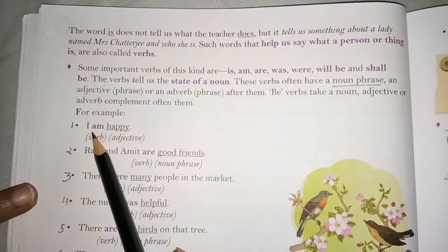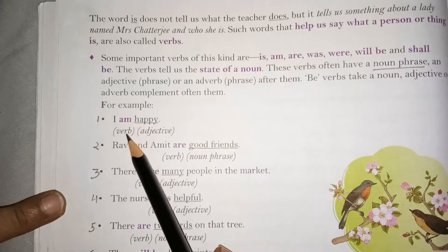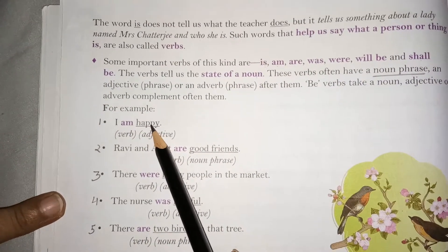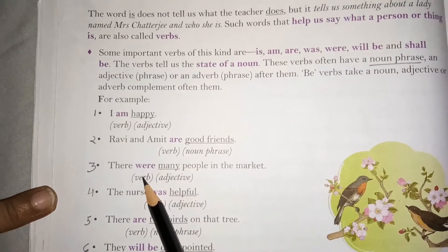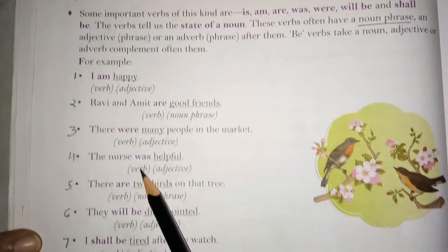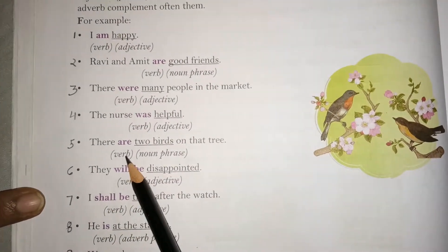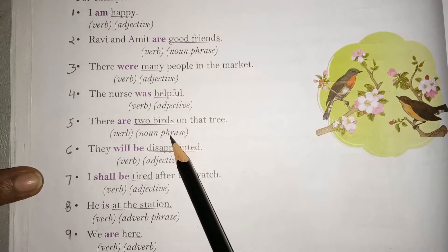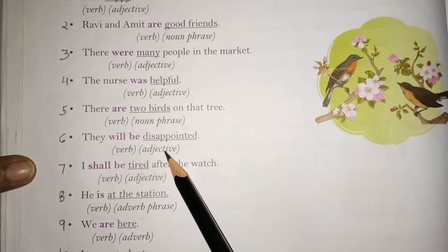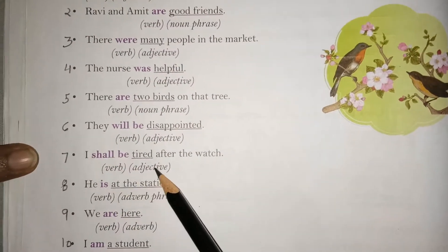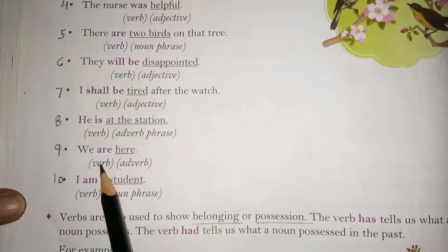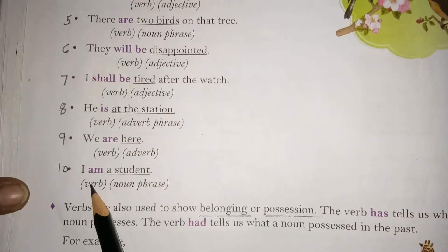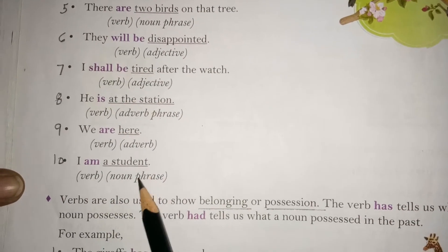For example: 'I am happy' — 'am' is the verb, followed by the adjective 'happy.' Similarly, verbs can be followed by a noun phrase, an adjective, or an adverb phrase. For example: verb followed by adjective 'helpful'; verb followed by noun phrase; verb followed by adverb phrase, such as 'is at the station.' The verb 'am' is followed by 'student,' a noun phrase.